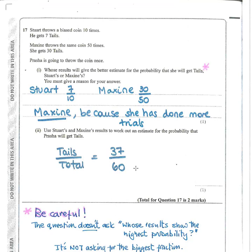Question 17: Stuart throws a biased coin 10 times and gets 7 tails. Maxine throws the same coin 50 times and gets 30 tails. Whose results give a better estimate for the probability of tails? The answer is Maxine's, because she did the most trials — the more times you do an experiment, the more reliable your results. Her results are more trustworthy, not because the probability is higher but because she threw the coin more times.